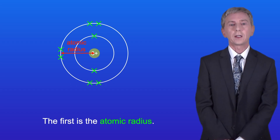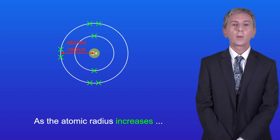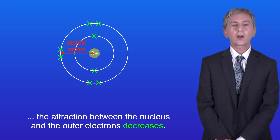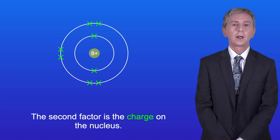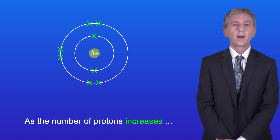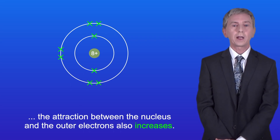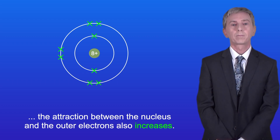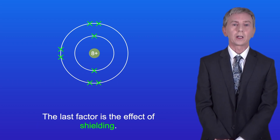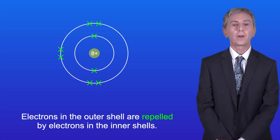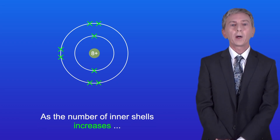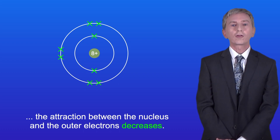The first is the atomic radius. As the atomic radius increases, the attraction between the nucleus and the outer electrons decreases. The second factor is the charge on the nucleus — as the number of protons increases, the attraction between the nucleus and the outer electrons also increases. The last factor is the effect of shielding. Electrons in the outer shell are repelled by electrons in the inner shells, and as the number of inner shells increases, the attraction between the nucleus and the outer electrons decreases.